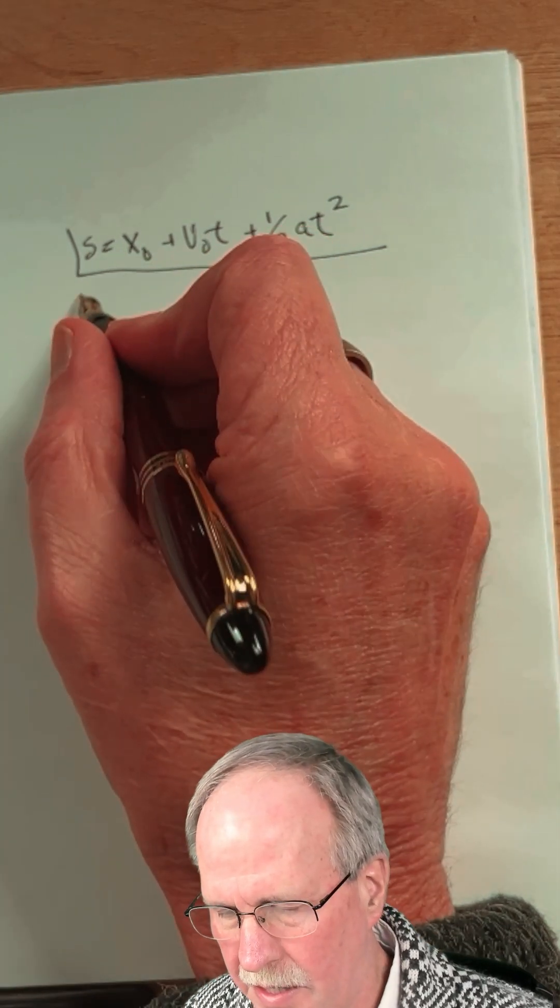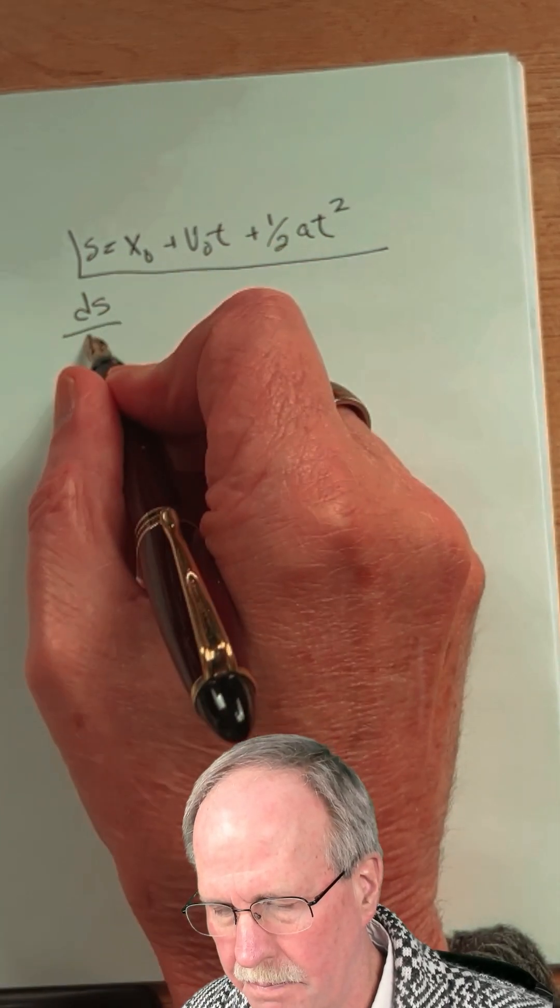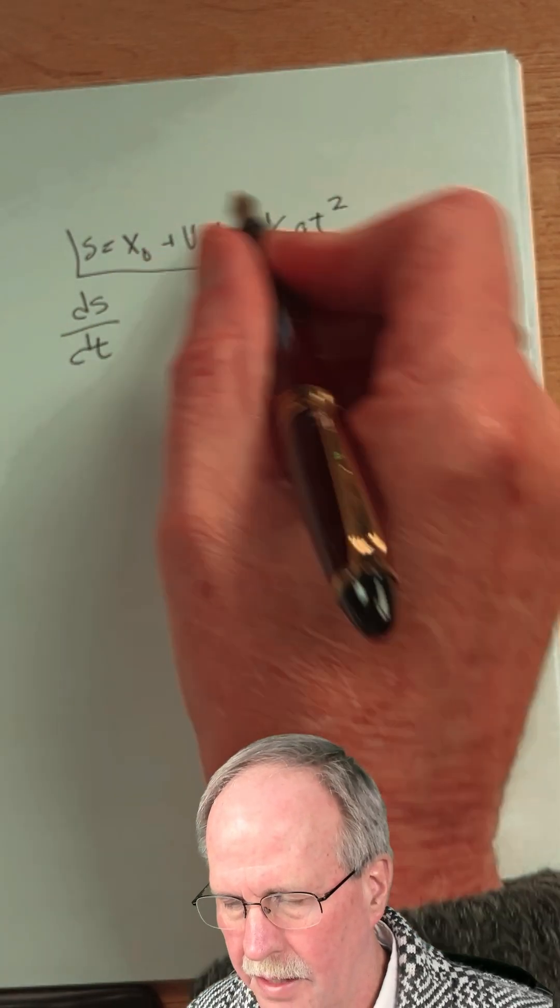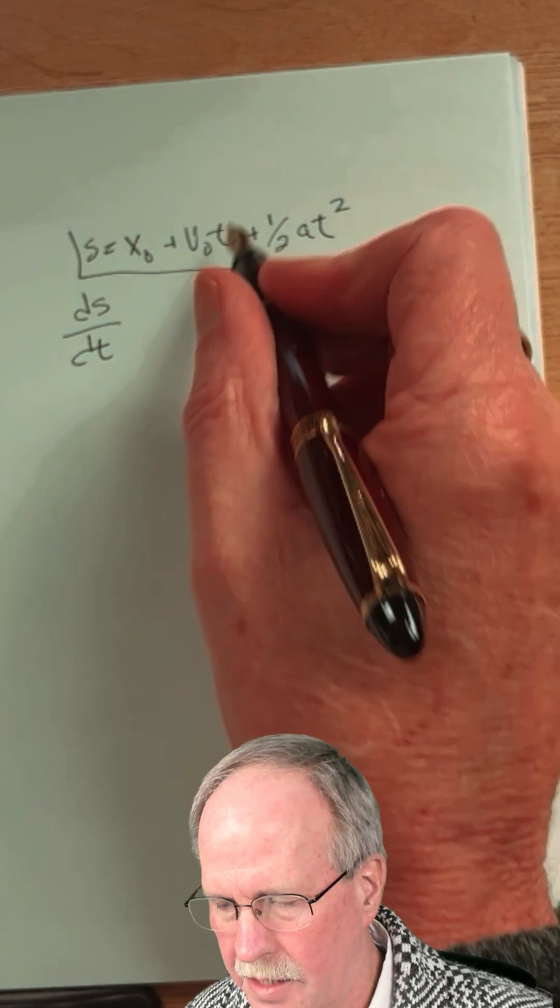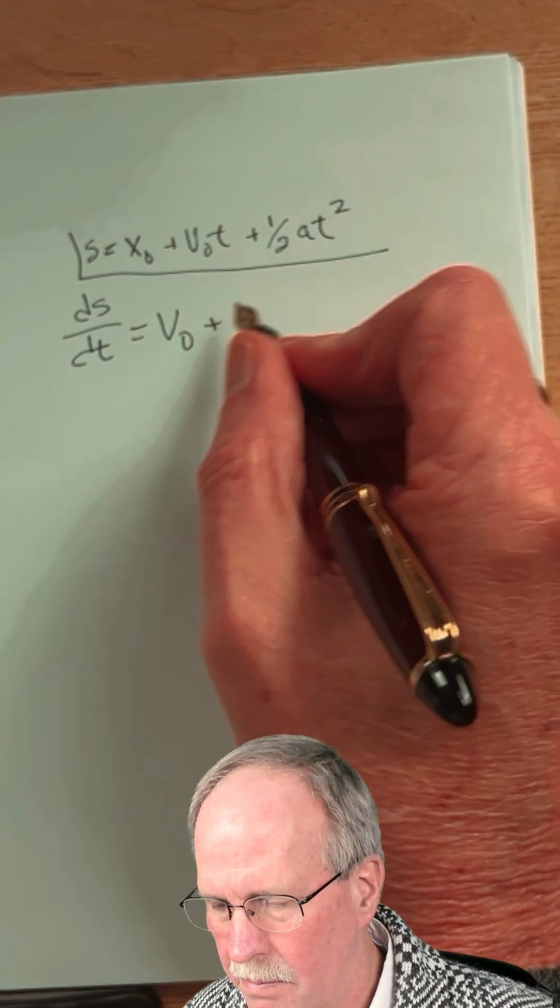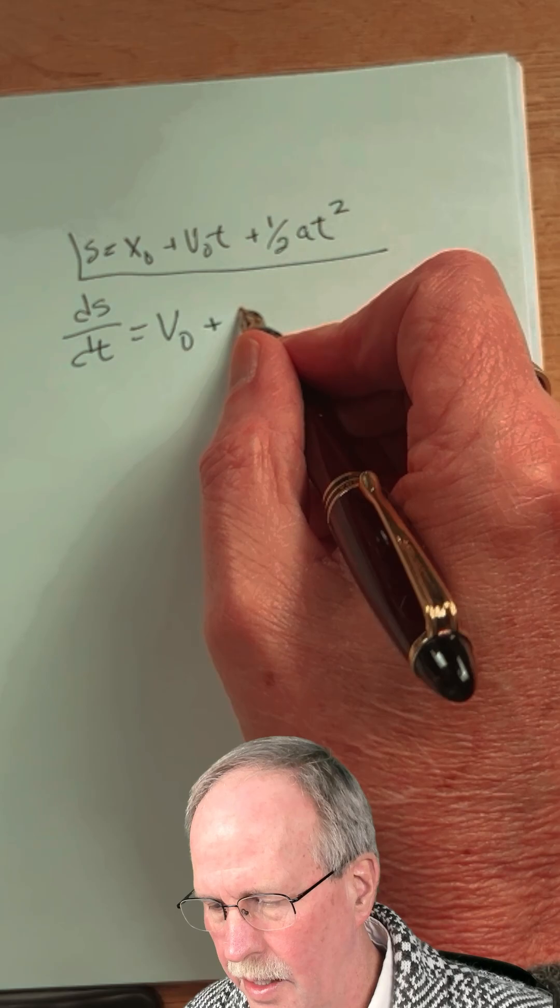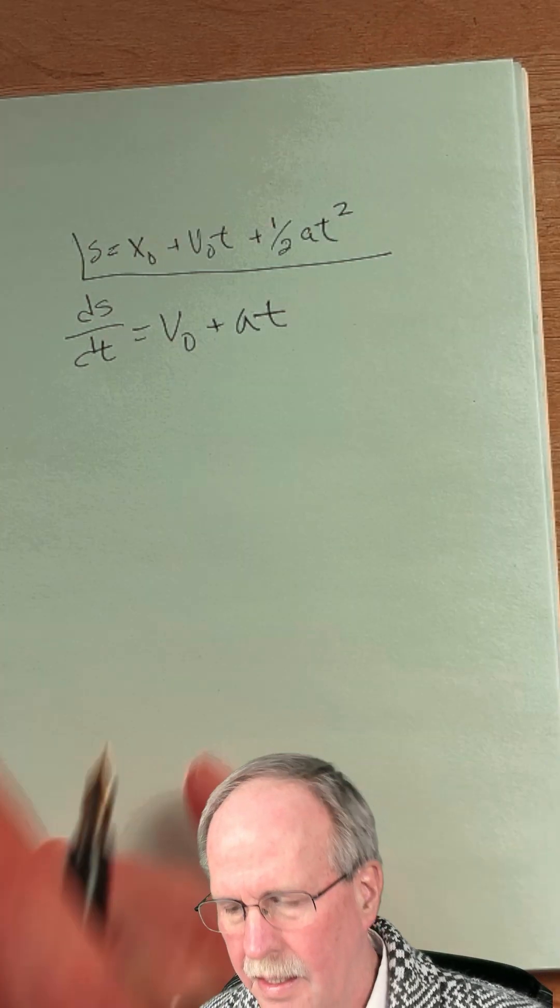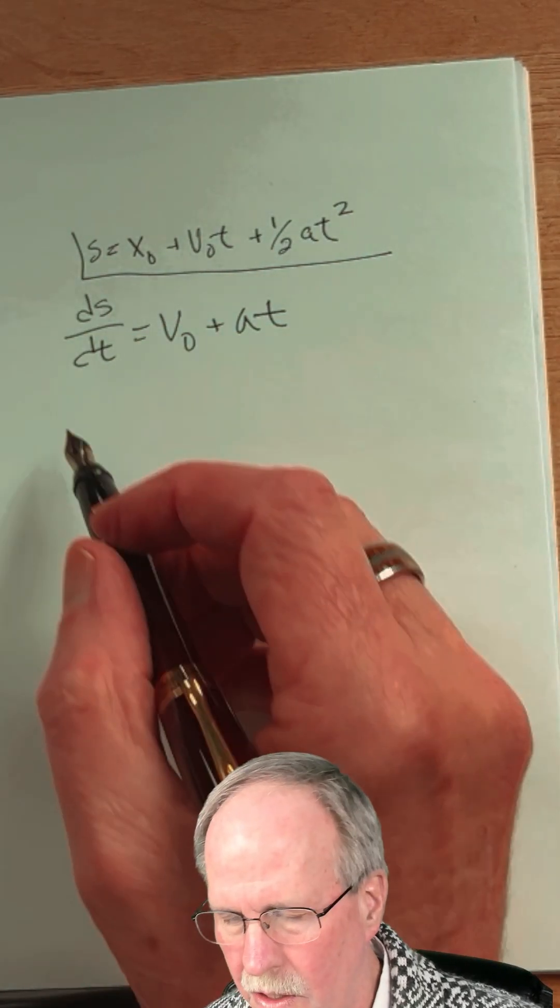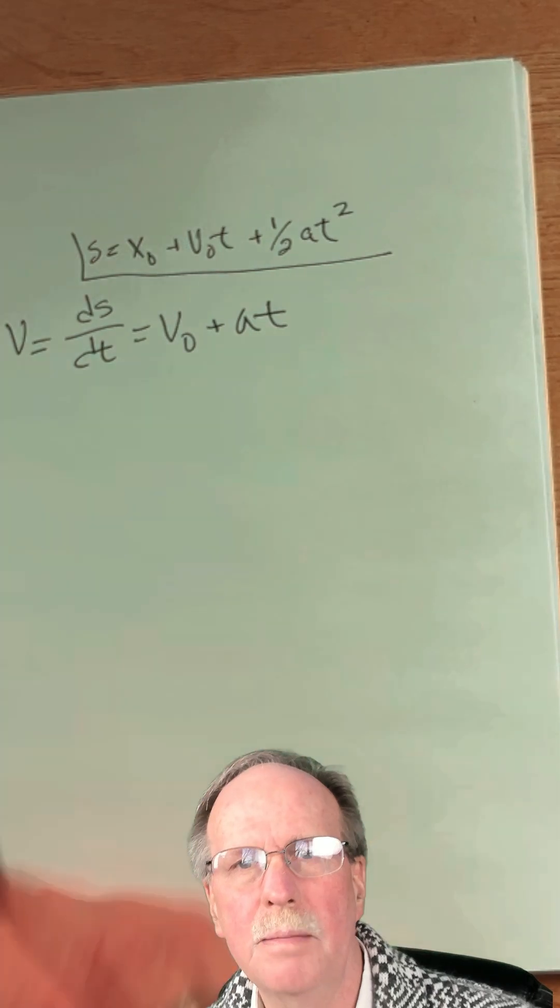If we take the derivative of s with respect to time, x₀ drops out, the t drops out here, and we get v₀ plus at. Now ds/dt is also called velocity, so we'll just go ahead and put that right there.